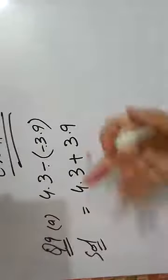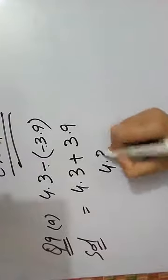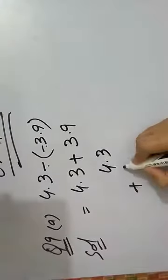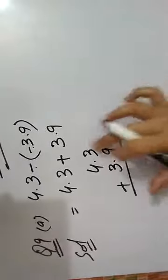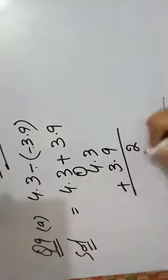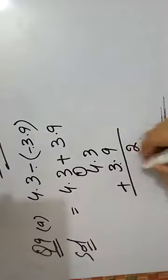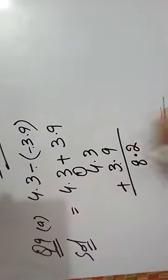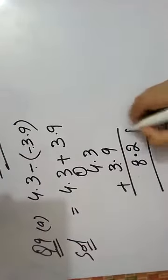Same like simple addition: 4.3 plus 3.9. 3 plus 9 is 12, 1 will be carry. 4 plus 3 is 7, 7 plus 1 is 8. So the answer will be 8.2.